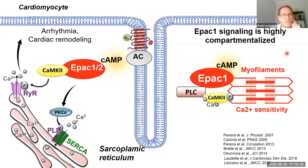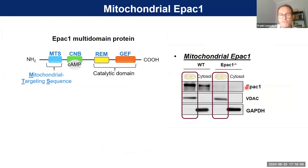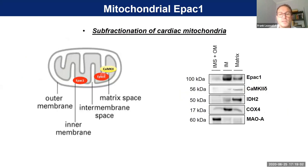More recently we observed that in the N-terminal part there is a functional mitochondrial targeting sequence. This sequence allows expression of EPAC-1 in mitochondria, as shown by western blot. After sub-fractionation, EPAC-1 is expressed not only in the matrix space but also in the inner membrane of mitochondria together with CaMKinase 2. The crucial EPAC-1/CaMKinase 2 axis is also present inside the mitochondria.